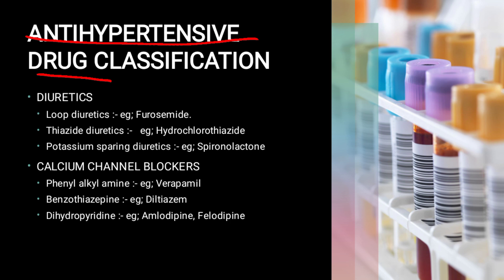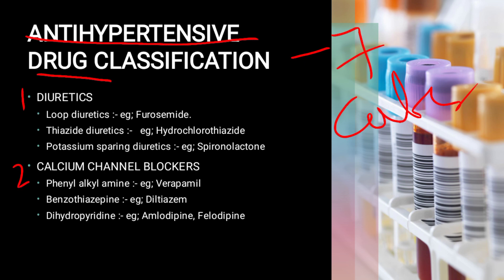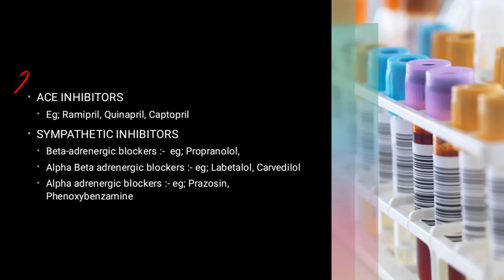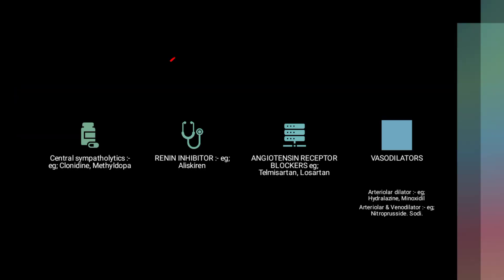Antihypertensive drug classification is divided into seven categories: first, diuretics; second, calcium channel blockers; third, ACE inhibitors; fourth, sympathetic inhibitors; fifth, renin inhibitors; sixth, angiotensin receptor blockers; and seventh, vasodilators.